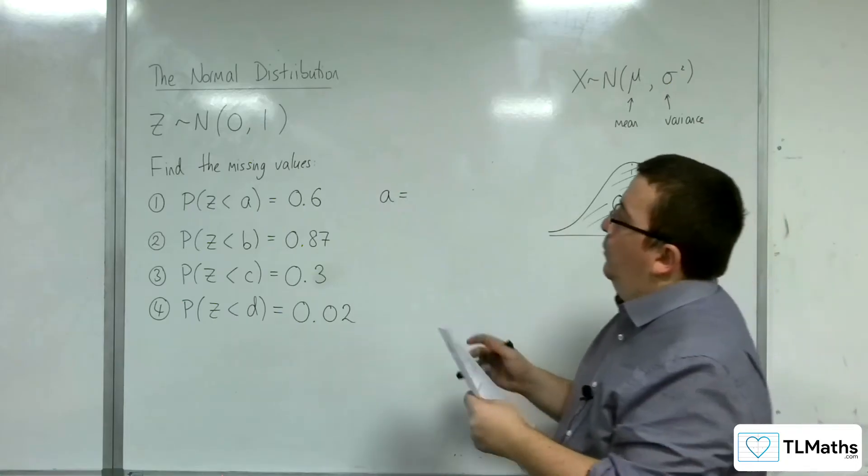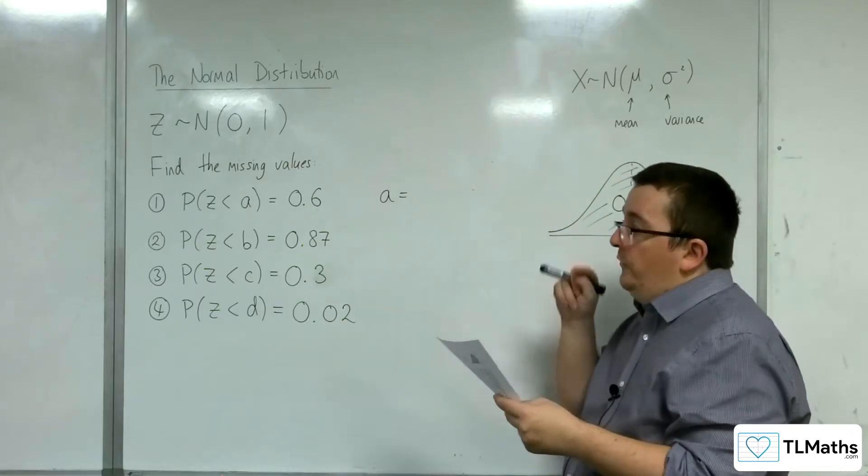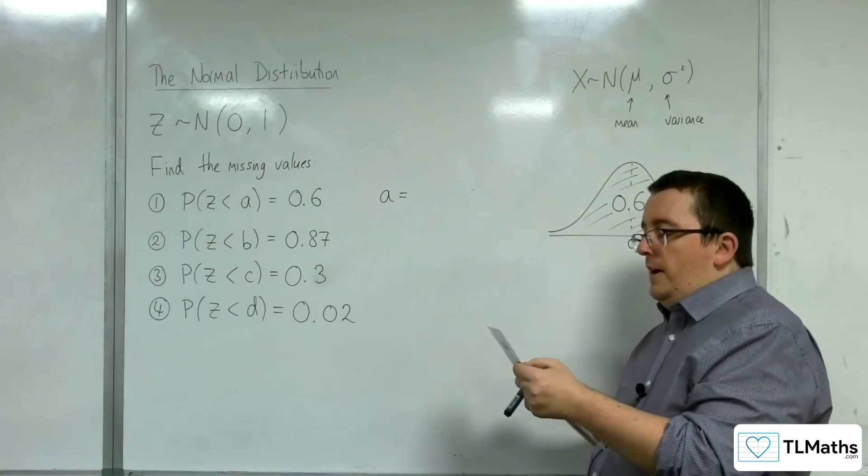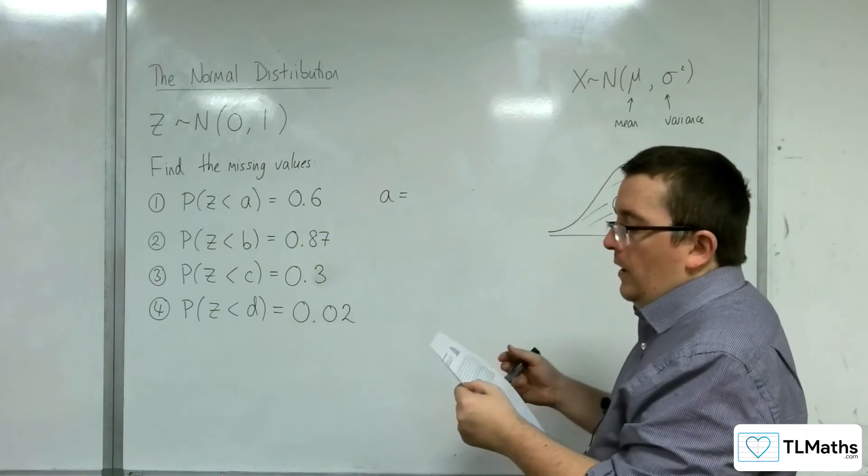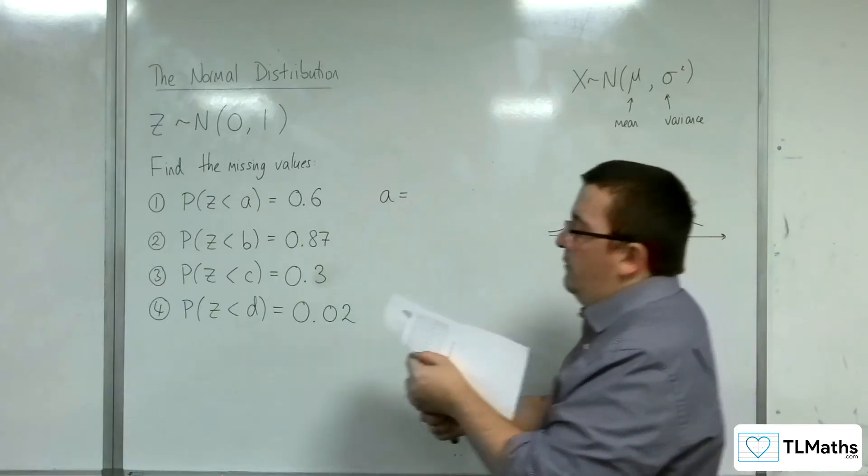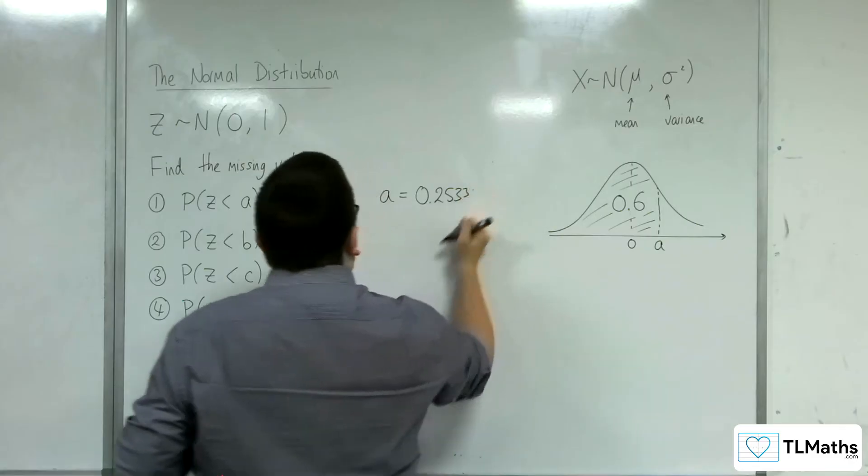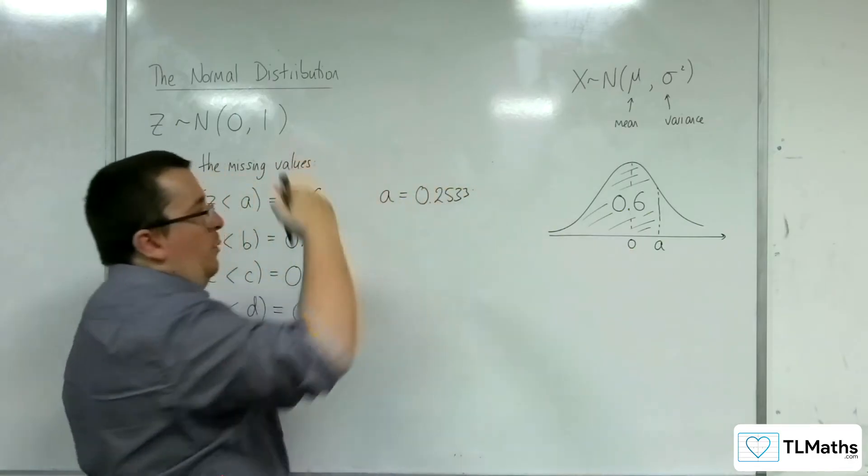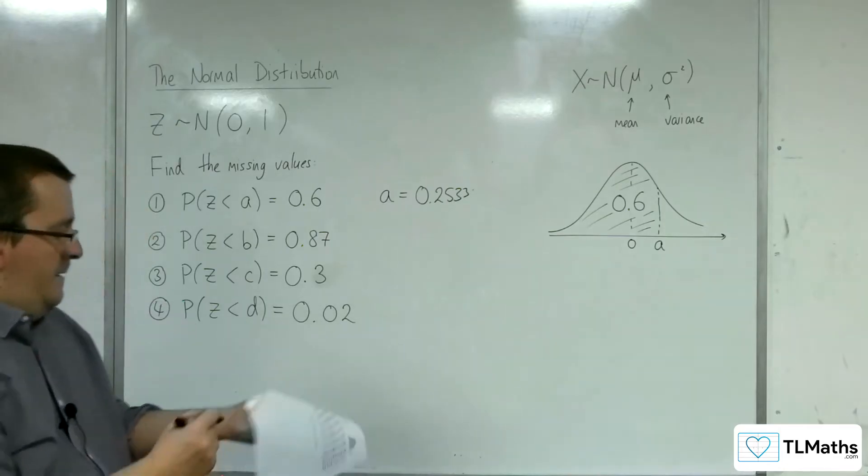So, what are we looking at? We are looking at the probability being 0.6. So, you find 0.6 on here, and you get 0.2533. So, a little bit along from 0 is 0.2533, which is the value I wanted.